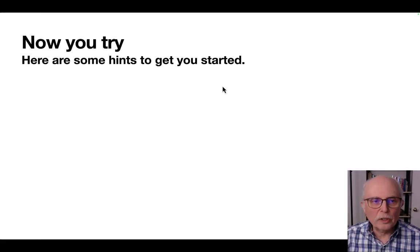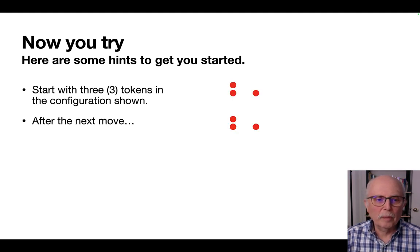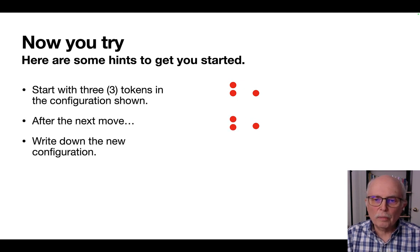Here are some hints to get you started. Start with three tokens in this configuration. After the next move, it'll look like this. And then when you reorder them, it'll look like, well, it looks like the original.